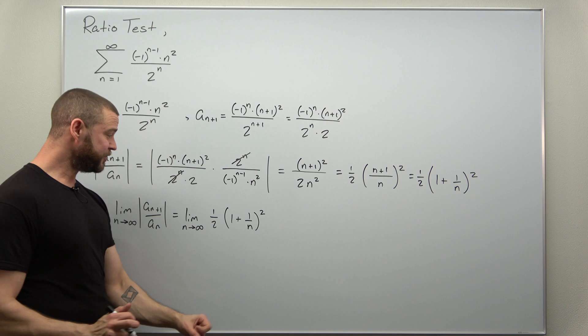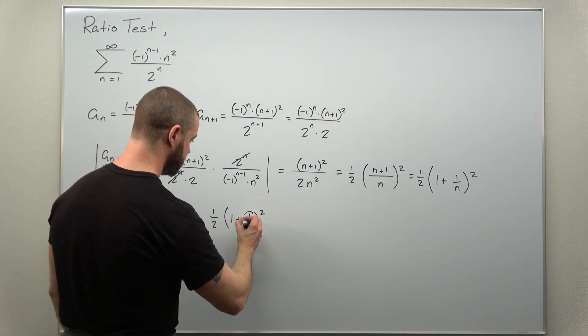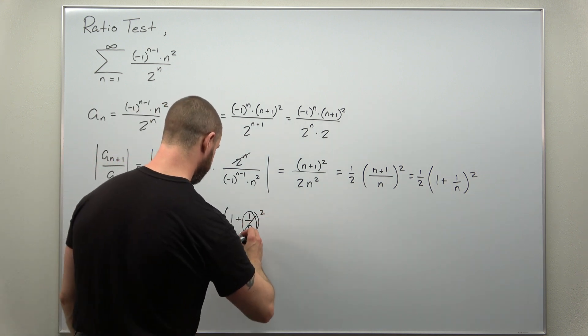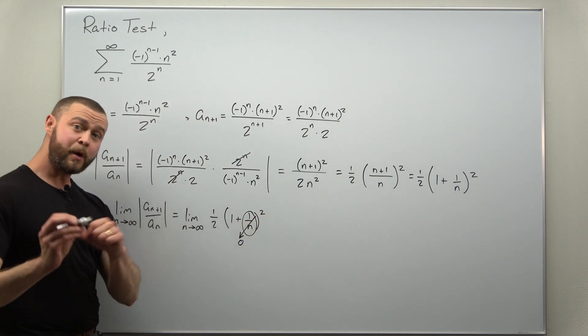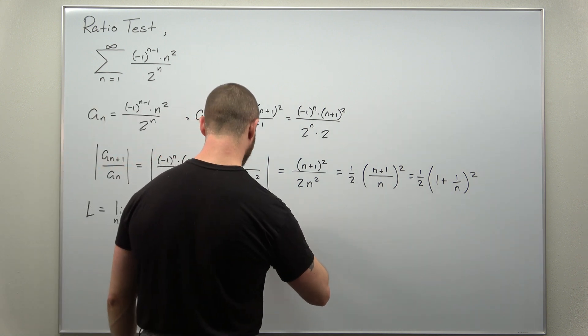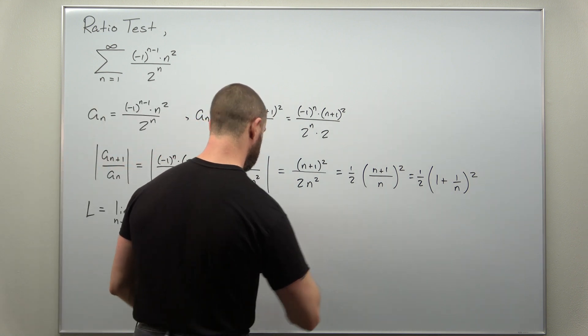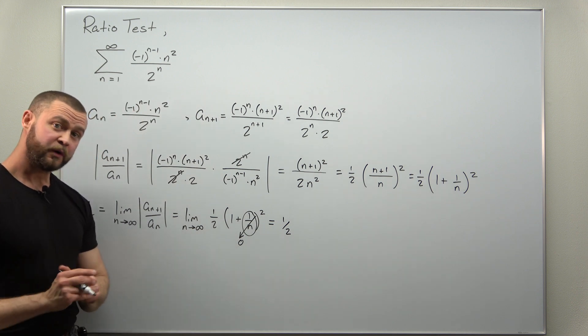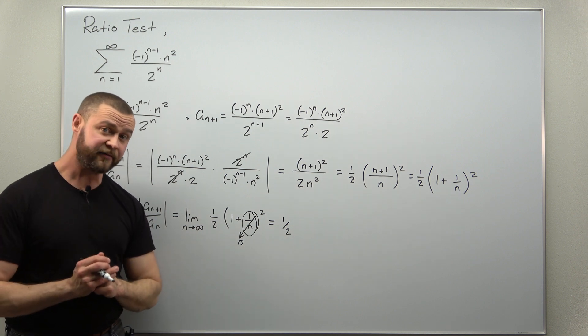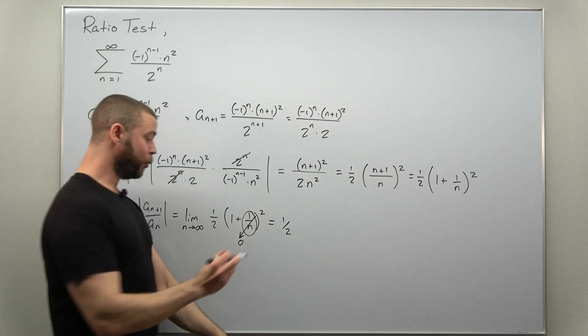Now, as n goes to infinity, your one over n term is going to get small approaching zero. And it looks like what we find here is our limit is going to approach and equal one half. So as n goes to infinity, this ratio of terms approaches one half, which is less than one.